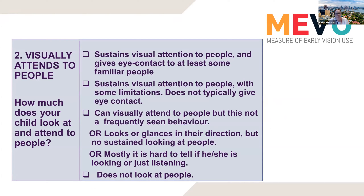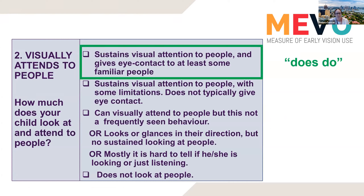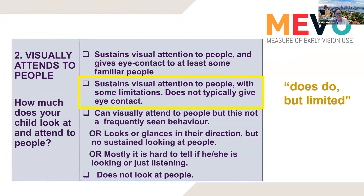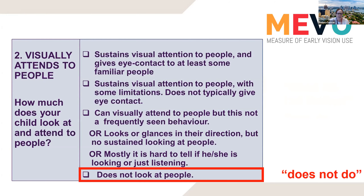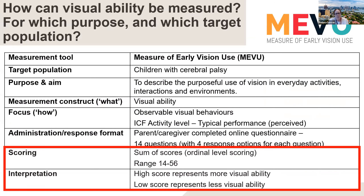When completing ME-VIEW, parents choose one option from four that best describes their child's typical performance in everyday activities. An example is item two: 'How much does your child look at and attend to people?' The general meaning of the four response options across all items is: 'does do' (highest level of ability), 'does do but limited,' 'can do or may do,' and 'does not do.' Scoring is currently the sum of scores, resulting in a range from 14, reflecting the lowest levels of visual ability, to 56, reflecting higher levels.